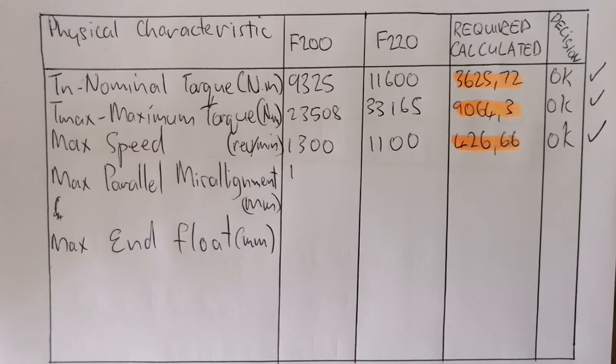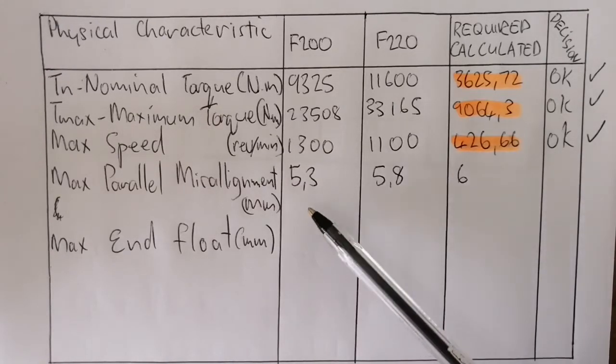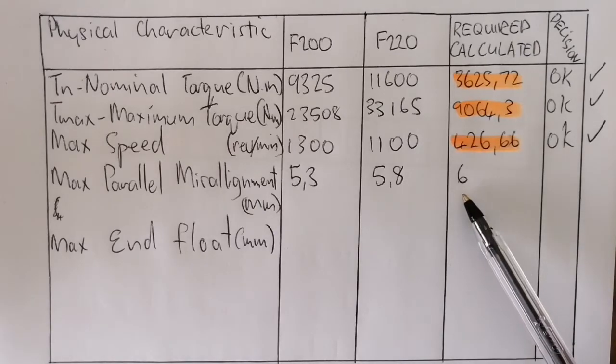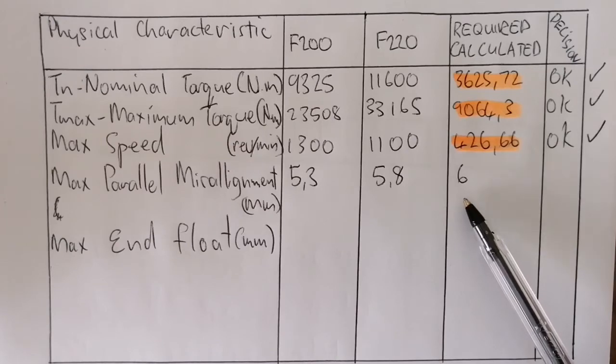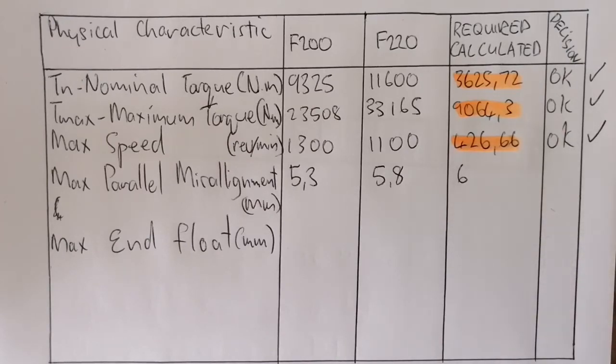Parallel misalignment - the F200 can handle 5.3 and 5.8 can be handled by the F220. We require 6 millimeters of misalignment that it can handle. Therefore it's not satisfactory and therefore not okay.